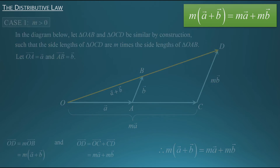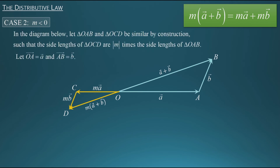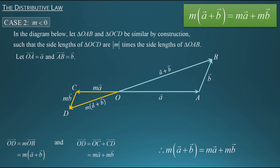Now let's take a look at the case where m is a negative number. Luckily, we don't need to go through each step in detail like we did when m is positive because the argument is essentially the same. The only difference is we'd set up our diagram differently, and that diagram would look like this. We've still set up two similar triangles OAB and OCD, but the orientation is different, allowing us to deal with the negative scalar m and vectors in opposite directions. We're still calling vector OA vector A and vector AB vector B, and everything follows the same way, giving us m times A plus B equals m times A plus m times B. In this case m is between zero and negative one, so triangle OCD is smaller than OAB; if m were below negative one, triangle OCD would be larger.